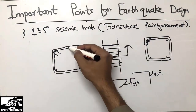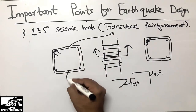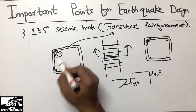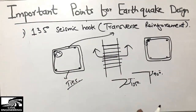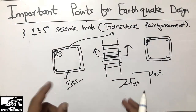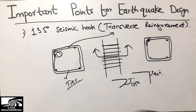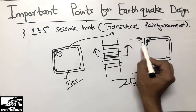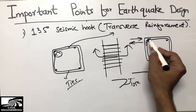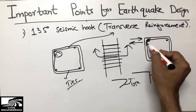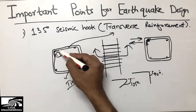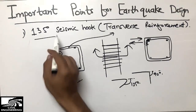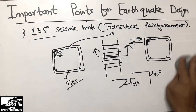The seismic hook must be provided in transverse reinforcement — in beams we call them stirrups, in columns we call them ties. The 135-degree seismic hook provides more strength and better embedment in concrete compared to a 90-degree hook. When earthquake load comes, the 90-degree hook can be pulled out more easily, while the 135-degree hook is more deeply bent into the structure, making it much harder to pull out during an earthquake.